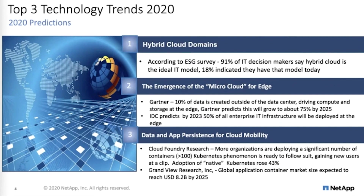The first leading trend: hybrid and multi-cloud architectures will become the norm. No surprise there. In 2019, data centers started to realize that public clouds are too expensive and they needed to find the balance between on-premises and public clouds — hence the introduction of private clouds, and then hybrid clouds. An ESG article I read surveyed hundreds of IT directors and decision makers and discovered that 91% identified hybrid cloud environments as being the ideal model for their IT environment, yet only 18% indicated they have that model today.